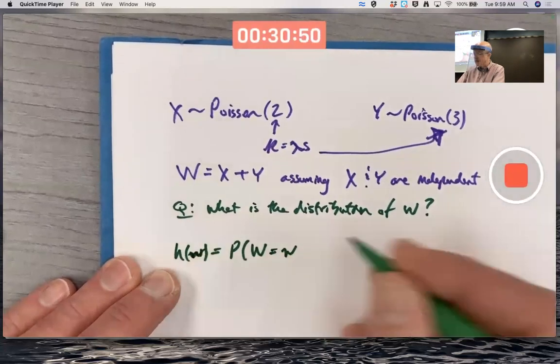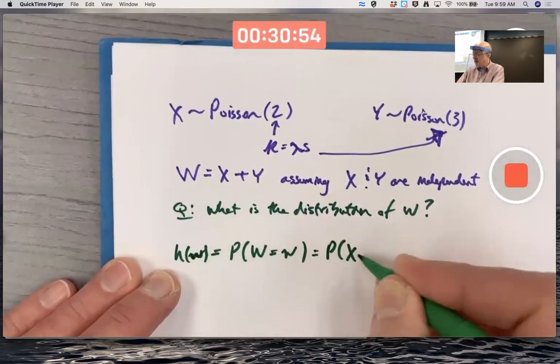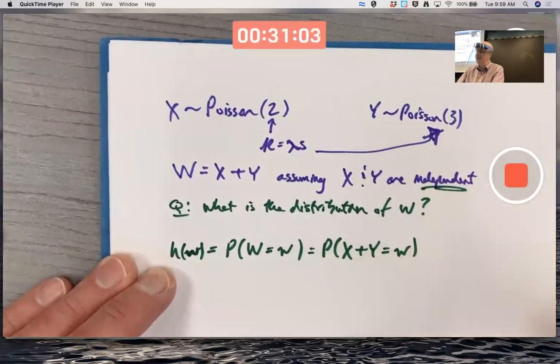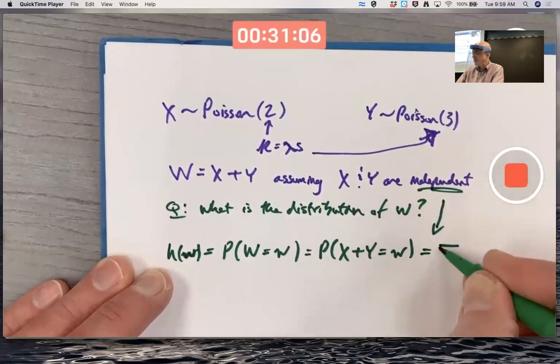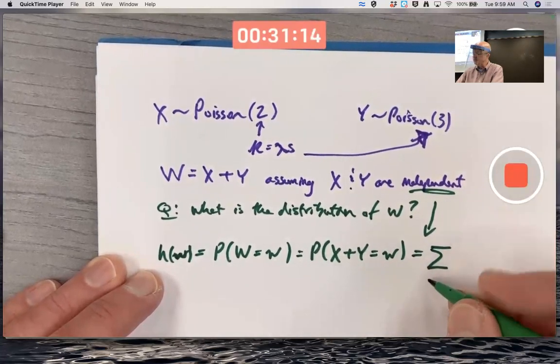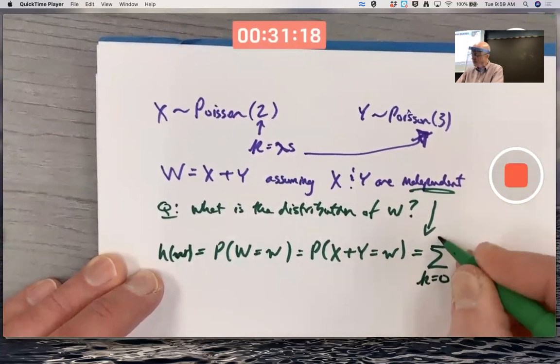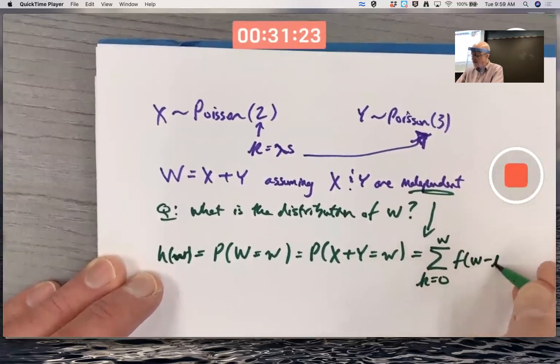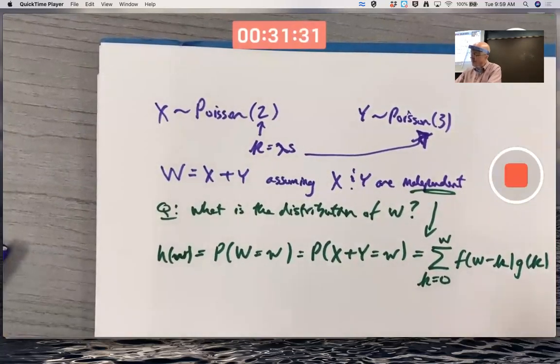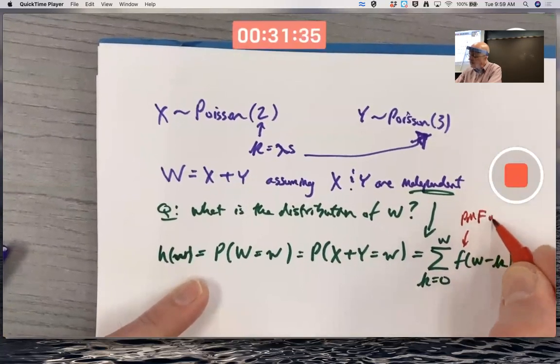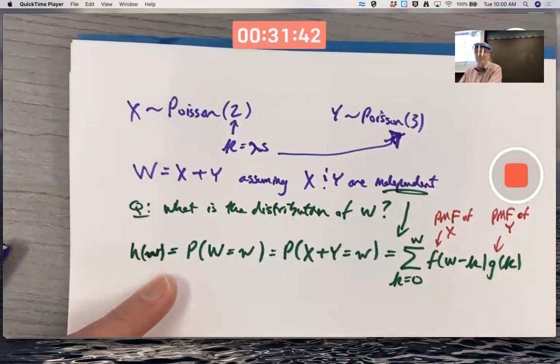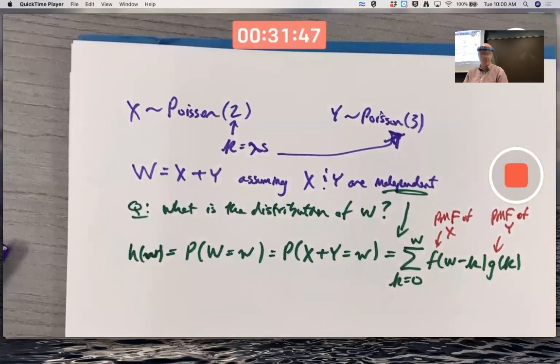So H of W, just like before, is going to be the PMF, probability mass function for W. It is this probability. I should use a cursive W to emphasize its lowercase here. And because of independence, that allows me to say, ultimately, that this is a summation of products of the PMFs of X and Y. Same kind of summation that was on the other page. K goes from 0 to W of F of W minus K times G of K. F and G are the PMFs of X and Y. PMF of X. PMF of Y.